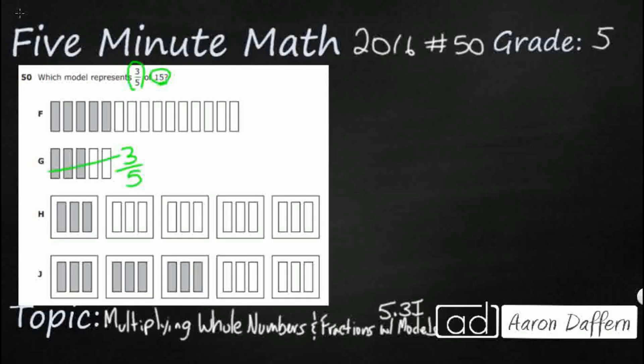Let's take a look at F. It looks like I've got one, two, three, four, five. Five shaded, and let's see how many unshaded. 6, 7, 8, 9, 10, 11, 12, 13, 14, 15.